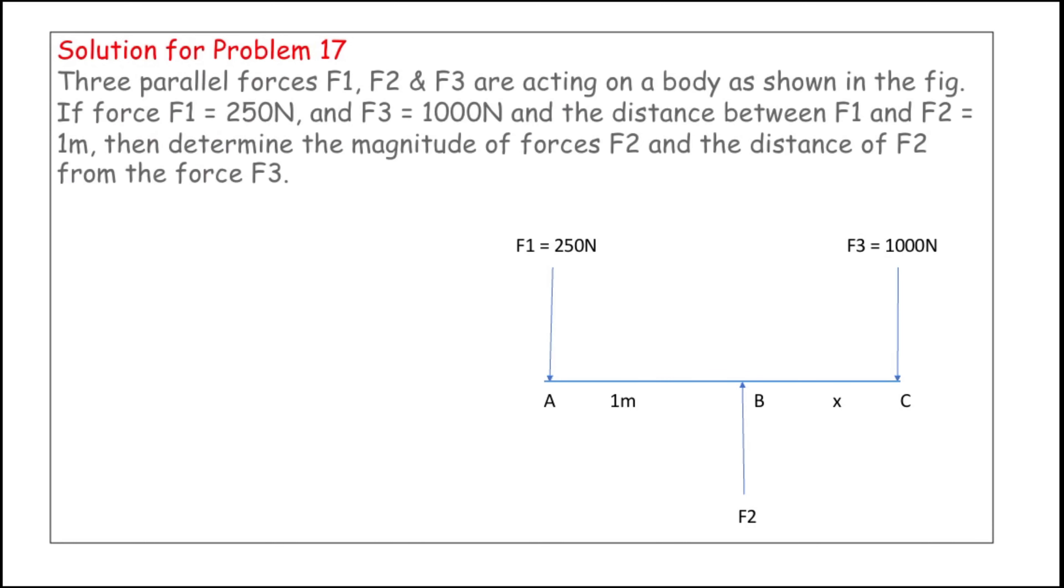So, the 17th problem is, three parallel forces F1, F2 and F3 are acting on a body as shown in the figure. The force F1 equals 250 Newton and force F3 equals 1000 Newton. We don't have the value of F2 here. So, the distance between F1 and F2 is 1 meter. Then determine the magnitude of force F2 and distance of F2 from the force F3.